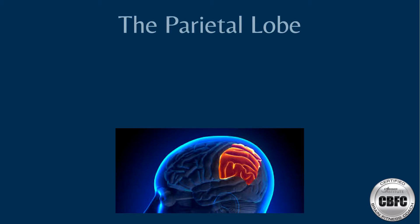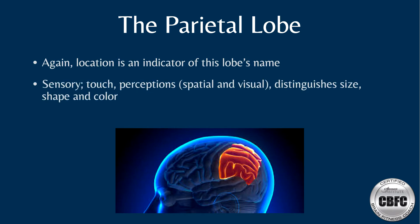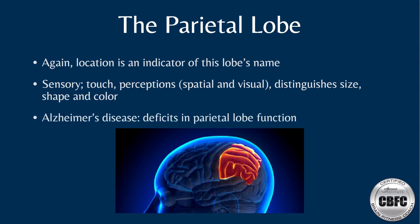The parietal lobe is located close to the top and back portion of the brain and is involved in the sense of touch and perceptions — both spatial and visual. It also allows us to distinguish size, shapes, and colors. Using images of the brain, we can see deficits in parietal lobe function among patients with Alzheimer's disease.